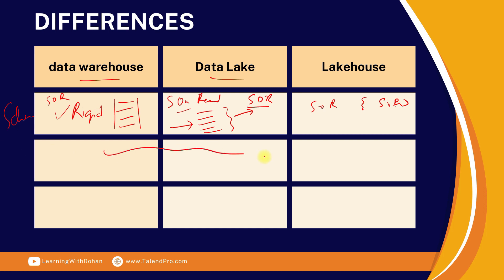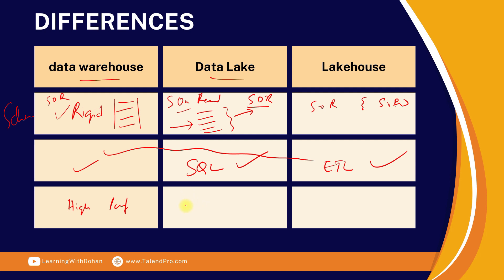All three systems provide SQL-based capabilities and you can perform ETL in all three. On performance, a data warehouse is built for high-performing analytical queries. In a data lake, since data is in the file system with no standard schema, reads are a little slower. In a lakehouse, it's more balanced — data is already in the specified format matching the source system, so retrieval is much faster.